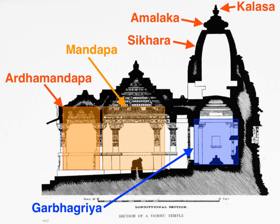The appropriate site for a mandir, suggest ancient Sanskrit texts, is near water and gardens, where lotus and flowers bloom, where swans, ducks and other birds are heard, where animals rest without fear of injury or harm. These harmonious places were recommended with the explanation that such are the places where gods play, and thus the best site for Hindu temples, while major Hindu mandirs are recommended at Sangams, river banks, lakes and seashore. The Brihat Samhita and Puranas suggest temples may also be built where a natural source of water is not present, recommending that a pond be built preferably in front or to the left of the temple with water gardens. If water is neither present naturally nor by design, water is symbolically present at the consecration of the temple or the deity.